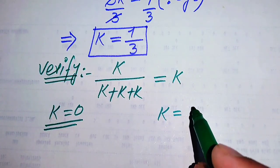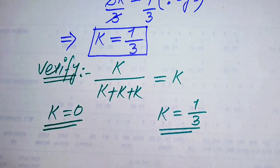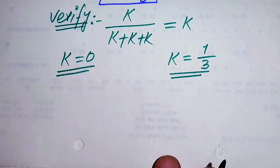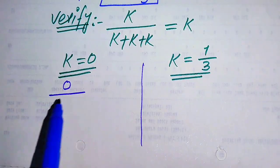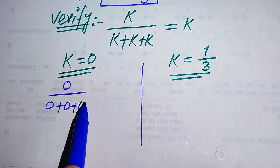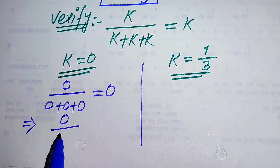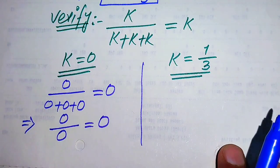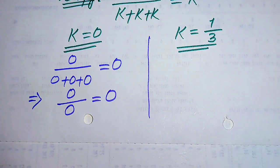We substitute k equals 0 into the equation. It becomes 0 divided by (0 + 0 + 0) equals 0, which is 0 over 0 equals 0. This is the indeterminate form.